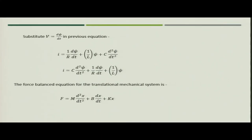If we substitute v with dψ/dt, where ψ is the magnetic flux, we can write: i = (1/R)·dψ/dt + (1/L)ψ + C·d²ψ/dt². Rearranging: i = C·d²ψ/dt² + (1/R)·dψ/dt + (1/L)ψ. The force balance equation for the translational mechanical system derived previously is: F = m·d²x/dt² + b·dx/dt + kx.